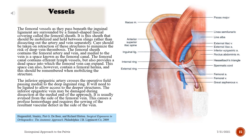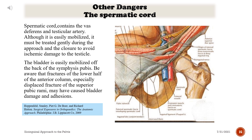The inferior epigastric artery crosses the operative field passing medial to the deep inguinal ring and will need to be ligated to allow access to the deeper structures. The inferior epigastric vein may be damaged during dissection at the medial end of the approach — it is usually avulsed from the side of the femoral vein, causing profuse hemorrhage requiring repair of the vascular defect. The spermatic cord contains the vas deferens and testicular artery; it must be treated gently to avoid ischemic damage to the testicle. Be aware that fractures of the lower half of the anterior column, especially displaced fractures of the superior pubic ramus, may have caused bladder damage and adhesions.